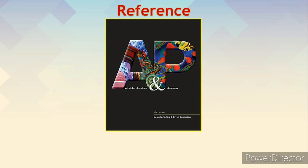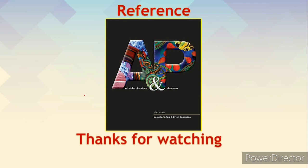So these are the factors controlling respiration. We have seen the respiratory center comprising the medullary rhythmicity area with inspiratory and expiratory areas, the apneustic area, and the pneumotaxic area, and how it controls respiration. We have also seen the various influences that modify the respiratory center's activity and alter the rate of respiration. Thank you for watching.